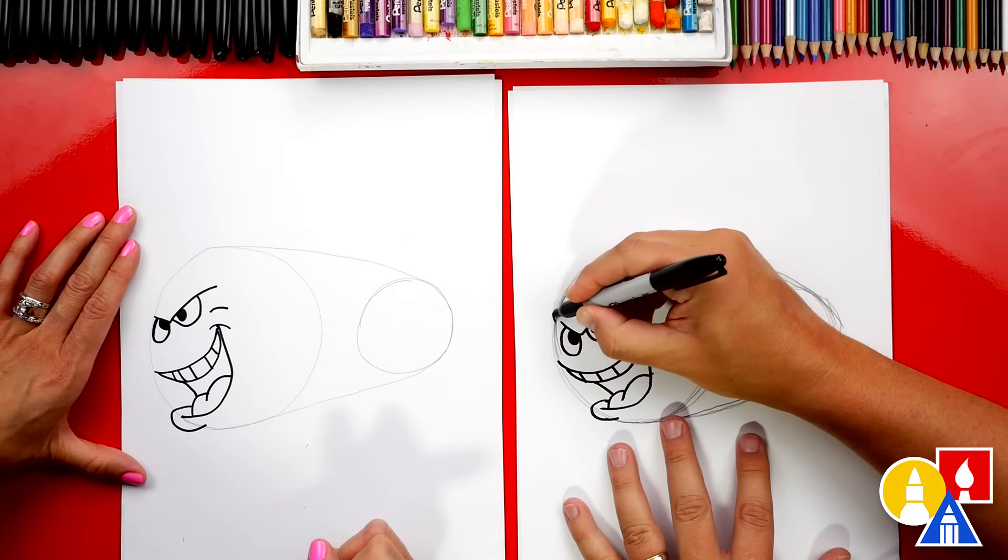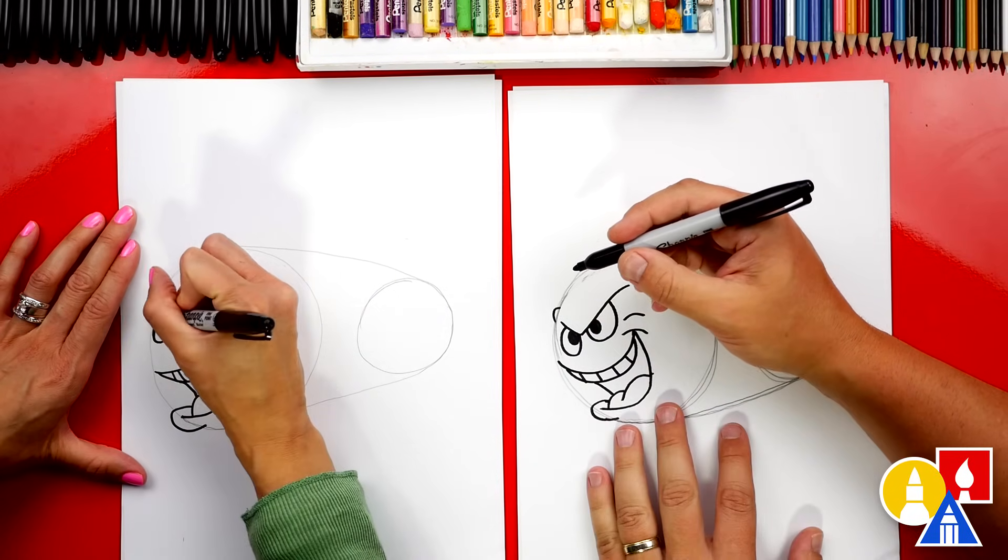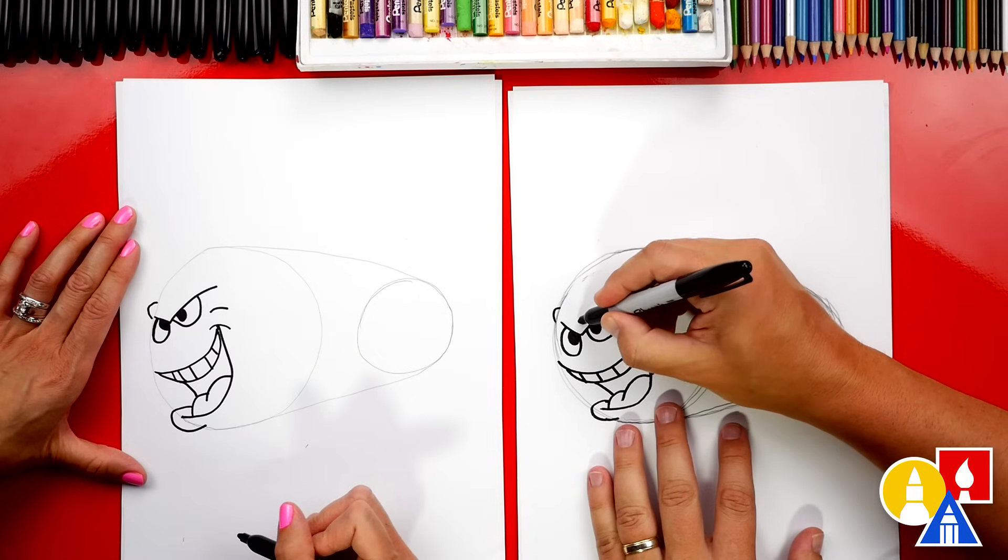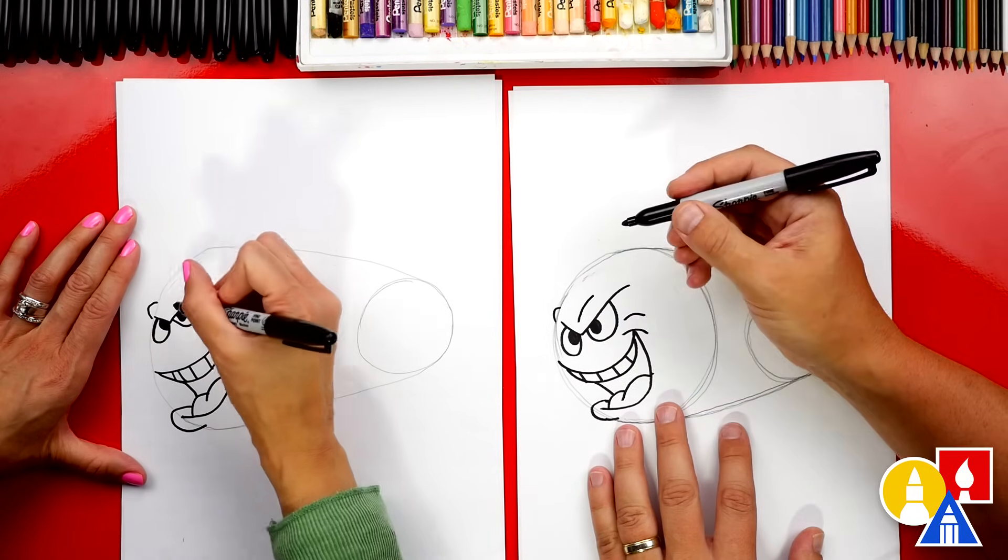Right here, let's draw a little bump coming out for the eyebrow. And we could also draw another bump right here for the other eyebrow.